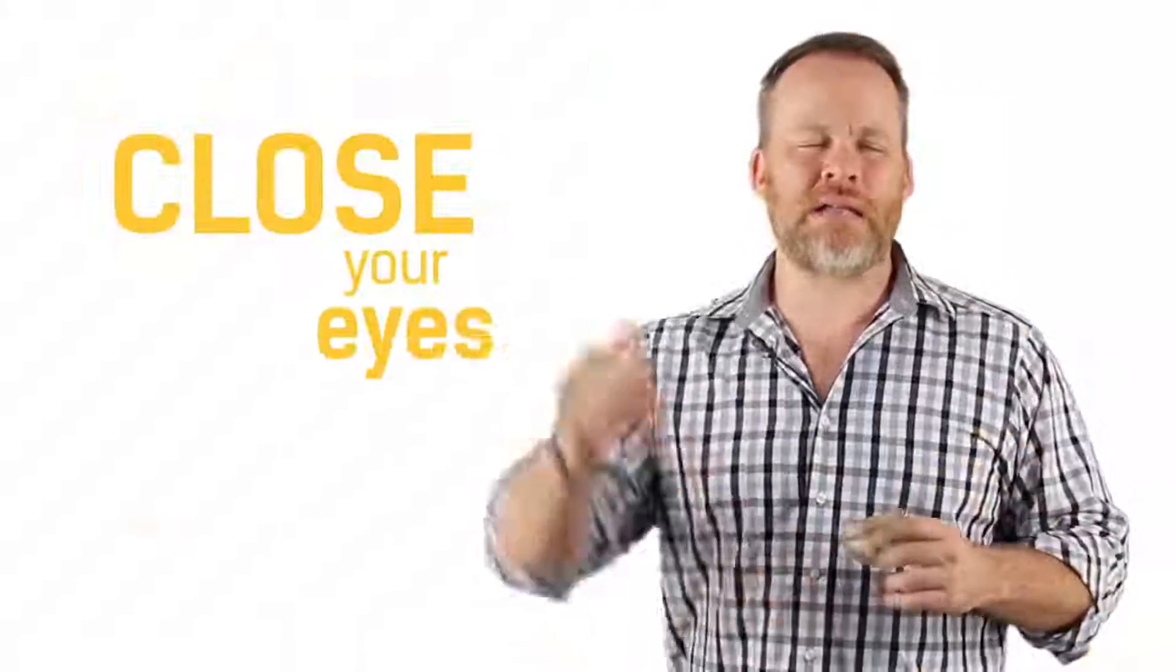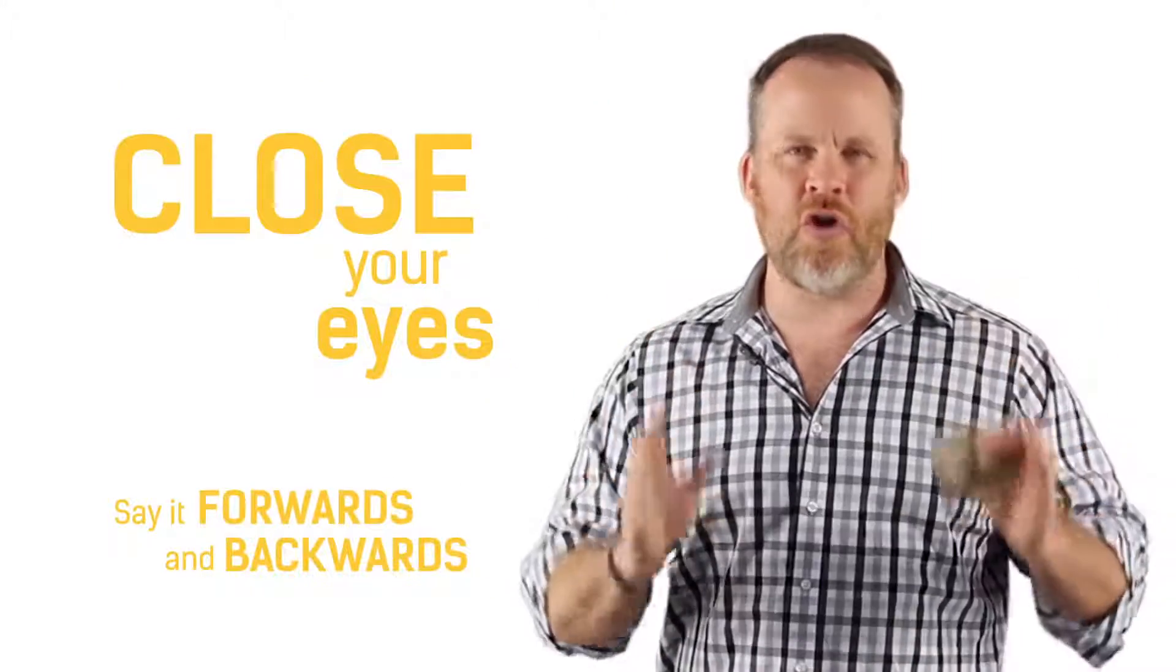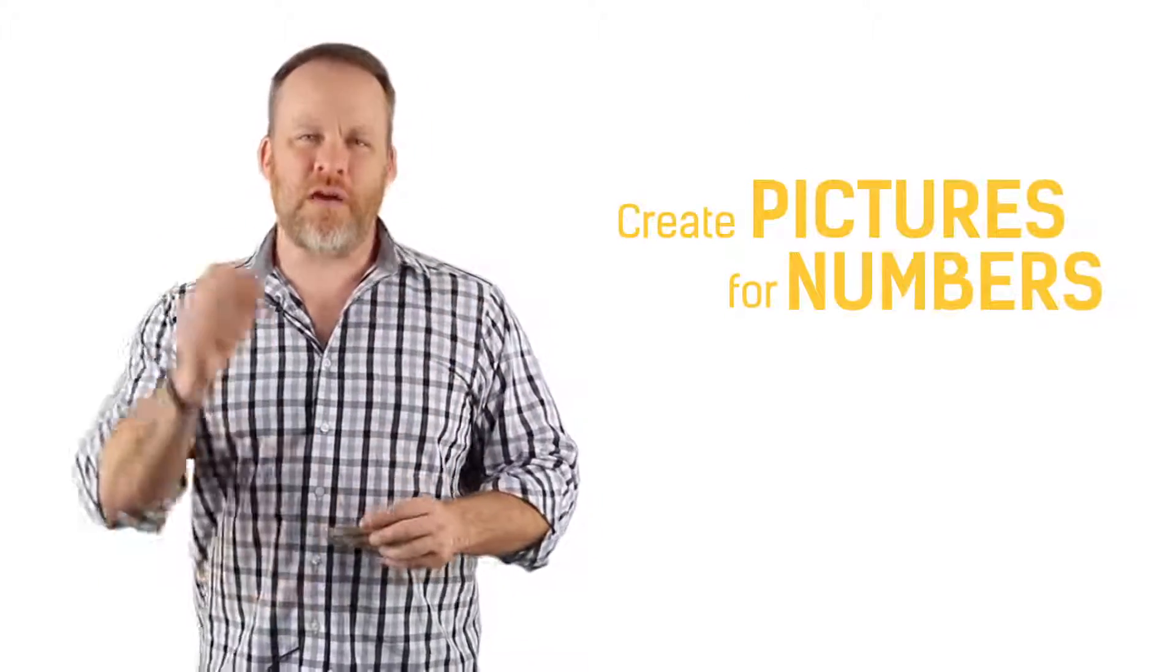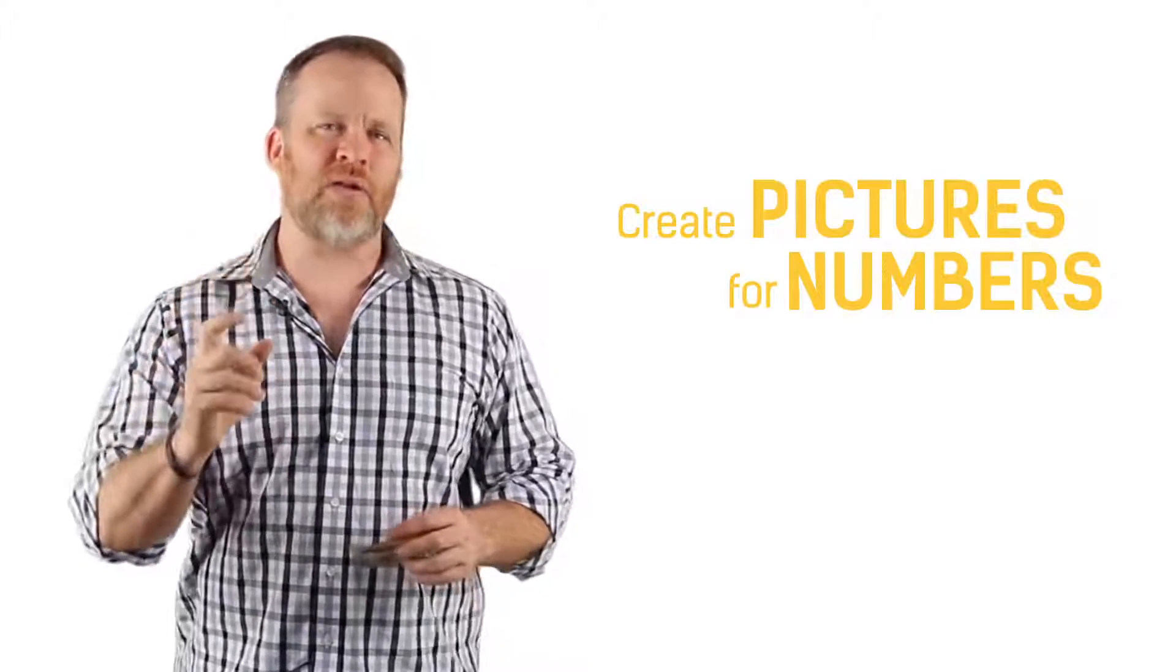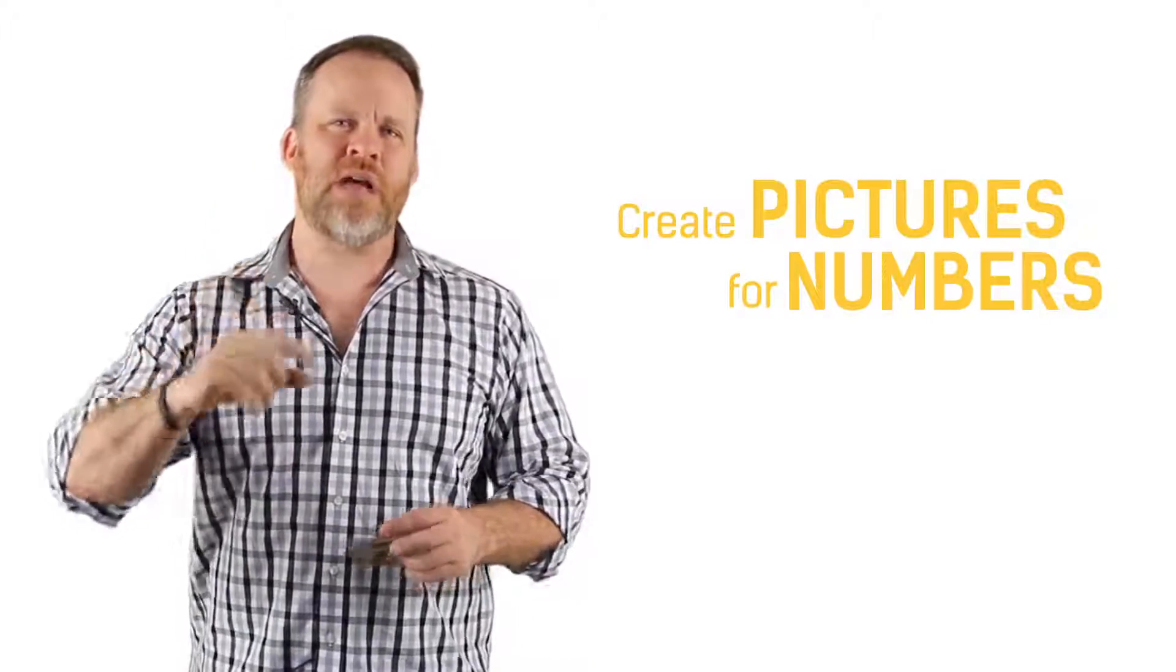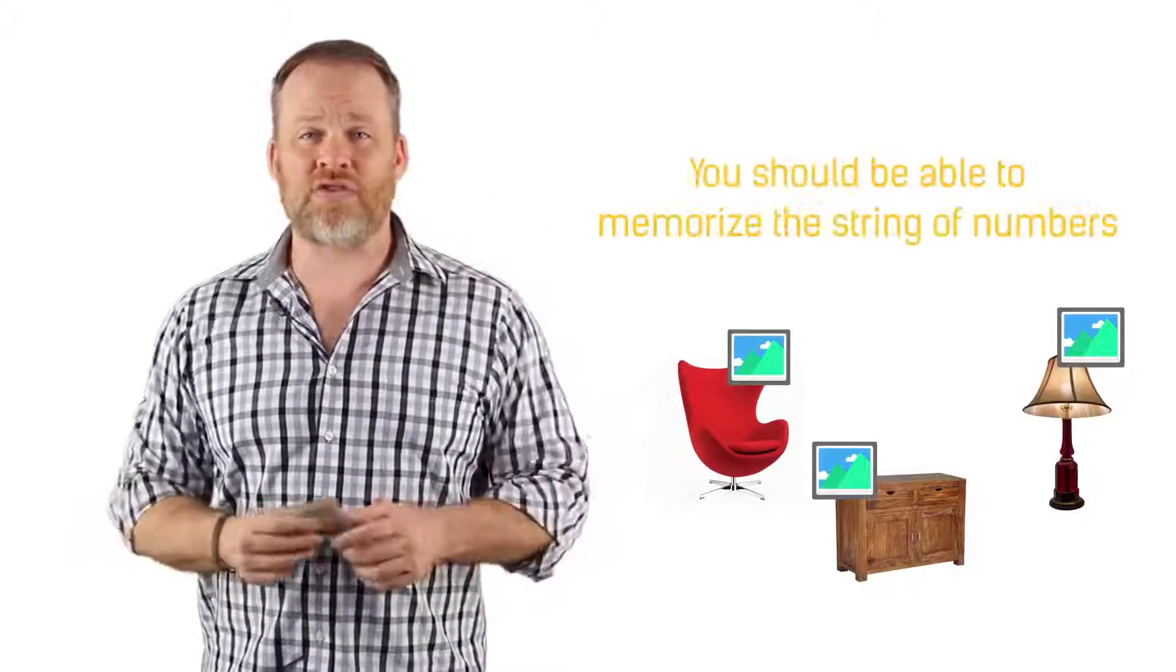The way that you get good at this is number five pieces of furniture in each room of your house. One, two, three, four, five, six, seven, eight, nine, 10. Close your eyes, say them forwards and backwards. Make sure that you know them solid and then create pictures for numbers. Whenever you see those numbers or whenever you hear those numbers, imagine those numbers, the pictures interacting with your furniture, and you should be able to memorize a string of numbers.